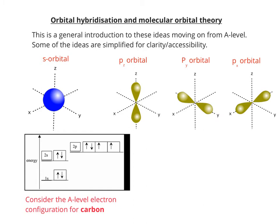If we now consider the A-level electron configuration for carbon: 1s², 2s², 2p⁴.